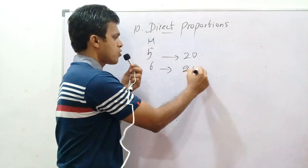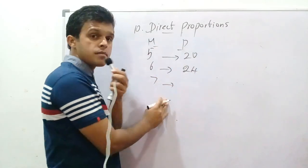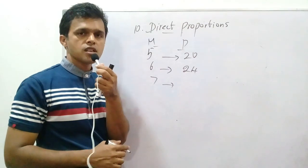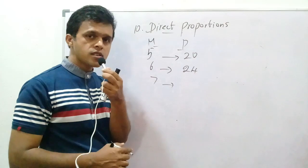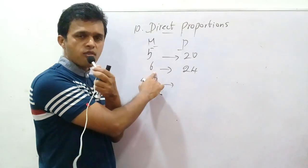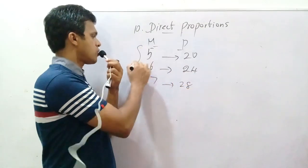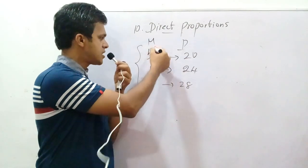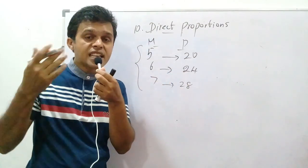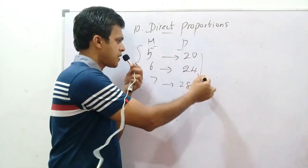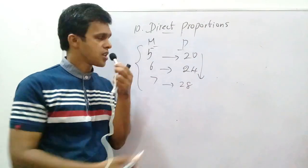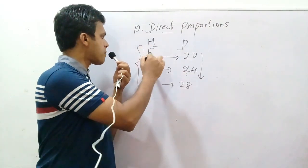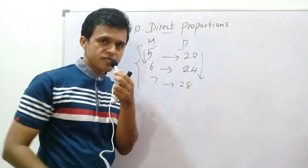Six mangoes can be bought for 24 rupees, and seven mangoes can be bought for 28 rupees. One mango costs 4 rupees, so six mangoes cost 24 and seven mangoes cost 28. When the number of mangoes increases, the price also increases — 20 becomes 24, 24 becomes 28, and so on.